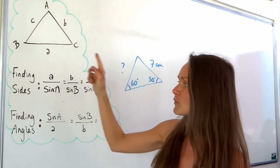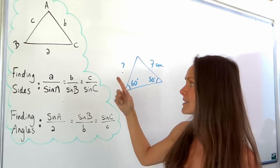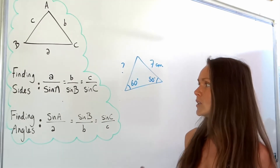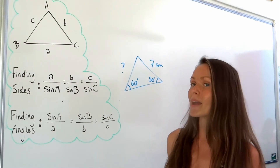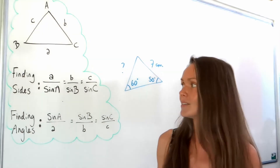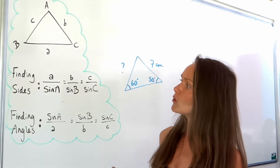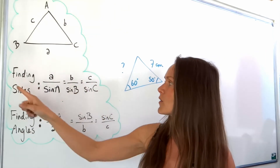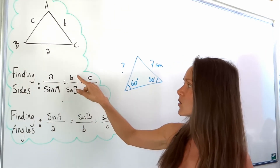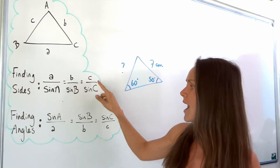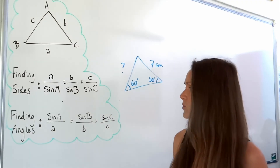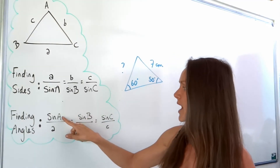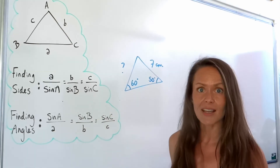Down here we've got the sine rule. These are exactly the same — just two different versions to make rearranging easier. When you're calculating sides, it's better to use the version with sides on top. And if you're calculating angles, use the version with angles as the numerators instead.